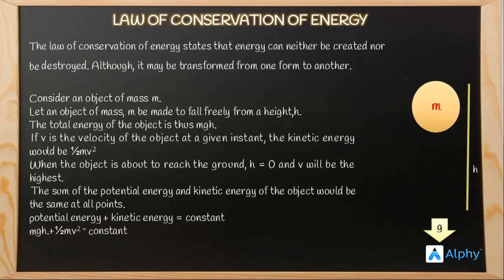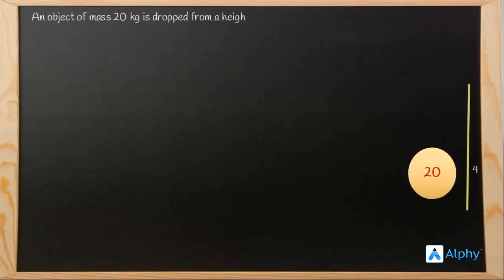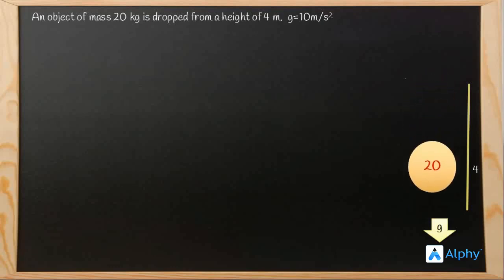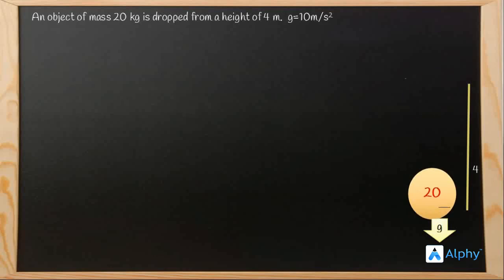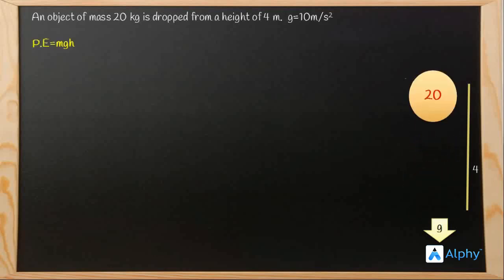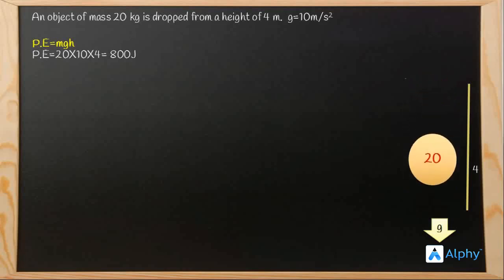Now let us understand this with a numerical example. Consider an object of mass 20 kg dropped from a height of 4 meters, where g is 10 m/s². We need to find the potential energy and kinetic energy of this object. We know the formula for potential energy is mgh, so potential energy equals 20 × 10 × 4, which is 800 joules.